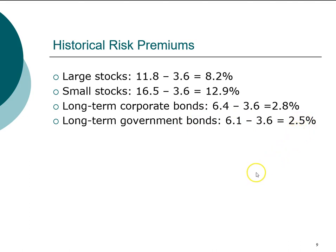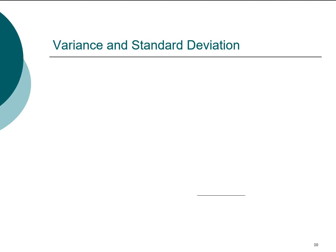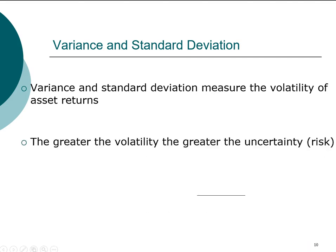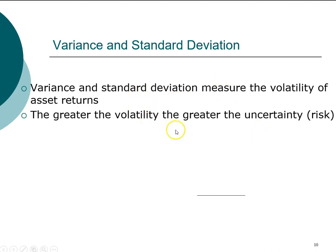Our next step is to capture the risk component of return. The sample statistics we use to capture risk are standard deviation and variance. In order to compute standard deviation, we first have to compute variance. These two statistics measure the volatility of asset returns — a quantitative way to capture risk as an alternative to visually judging how jagged a line is on a graph. The greater the volatility, the larger the standard deviation and variance, and the greater the risk or uncertainty associated with the investment.